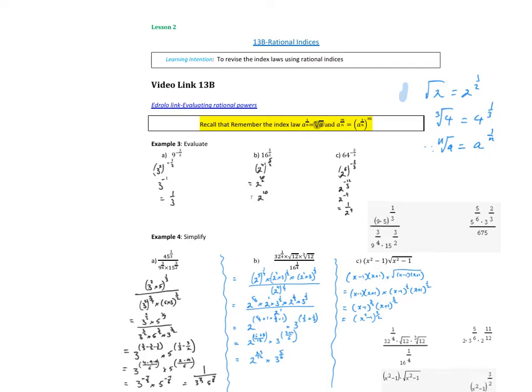So if we look at the first couple of examples here, 9 to the power of minus a half, let's write 9 as its prime decomposition. So 3 squared to the power of minus a half, we multiply the powers together, we get one third. 16 to the 5 on 2, let's change 16 to its base form, so 2 to the power of 4. So 2 to the 4 to the power of 5 on 2, again we multiply the powers, so we end up with 20 on 2, which is 2 to the 10.